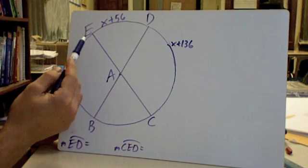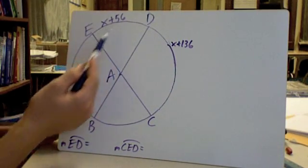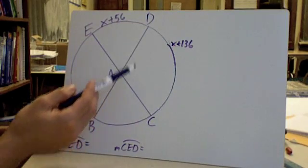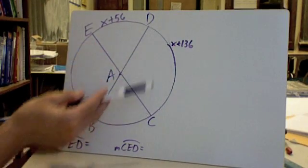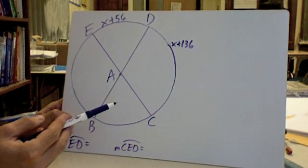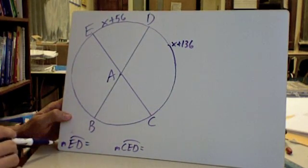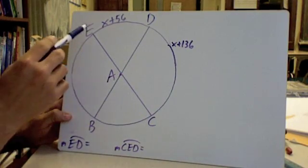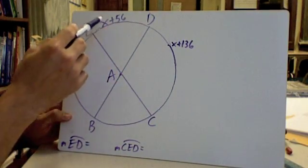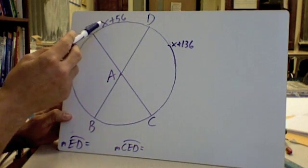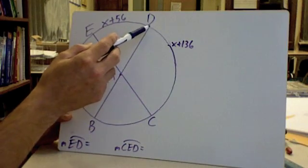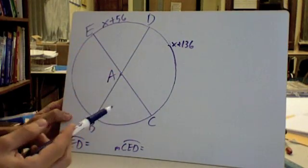I gave you the measurement of this arc ED, it's X plus 56. I gave you the measurement of arc DC, it's X plus 136. What I want you to do is figure out exactly how many degrees ED is. We don't know exactly how many degrees it is because we have this variable X. I don't know how many degrees this is yet either, I have to solve for X first.